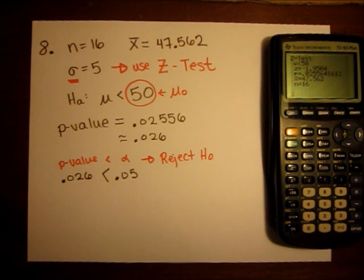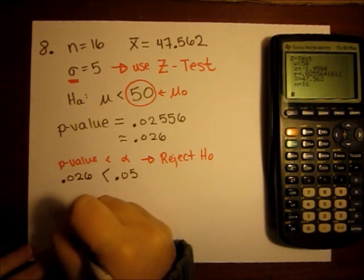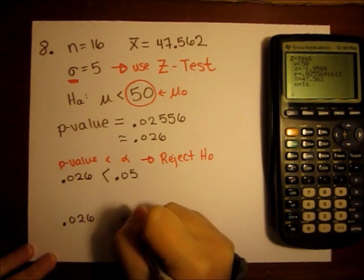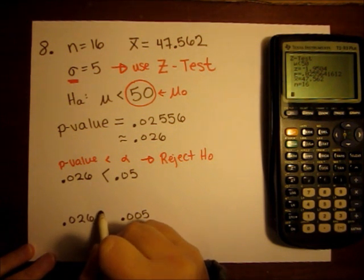And if I compare against the other alpha, the other level of significance, .026 and .005, now .026 is larger.